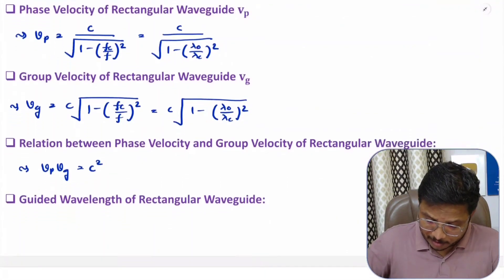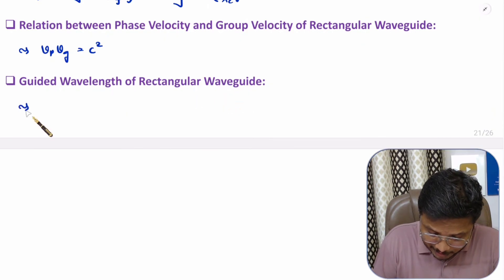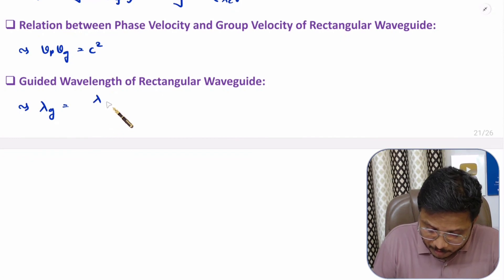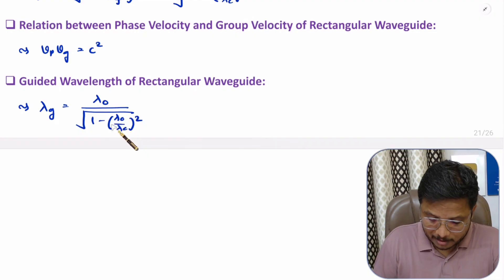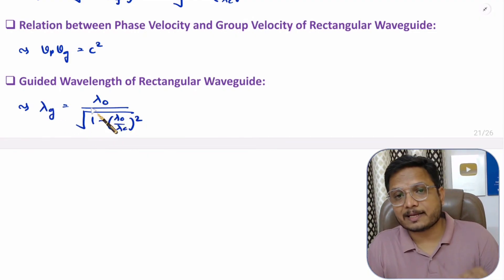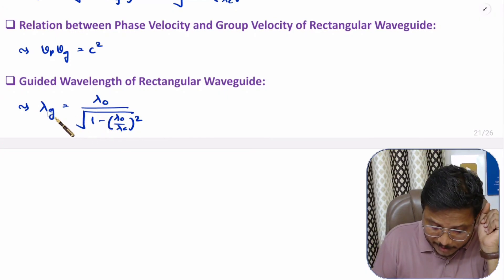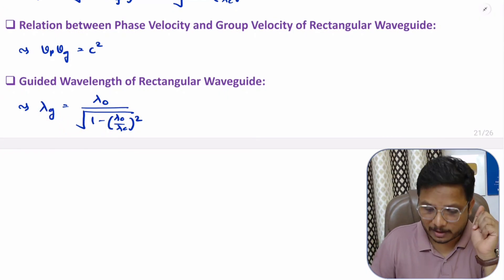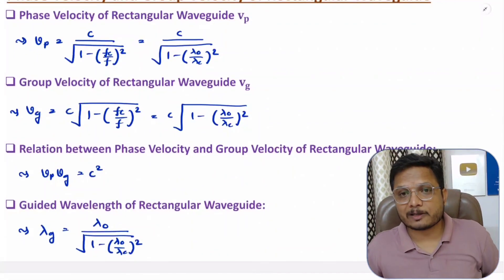For guided wavelength, the equation is: lambda_G = lambda_0 divided by the square root of (1 − (λ₀/λC)²). This equation is essential along with the phase velocity and group velocity equations for rectangular waveguide.